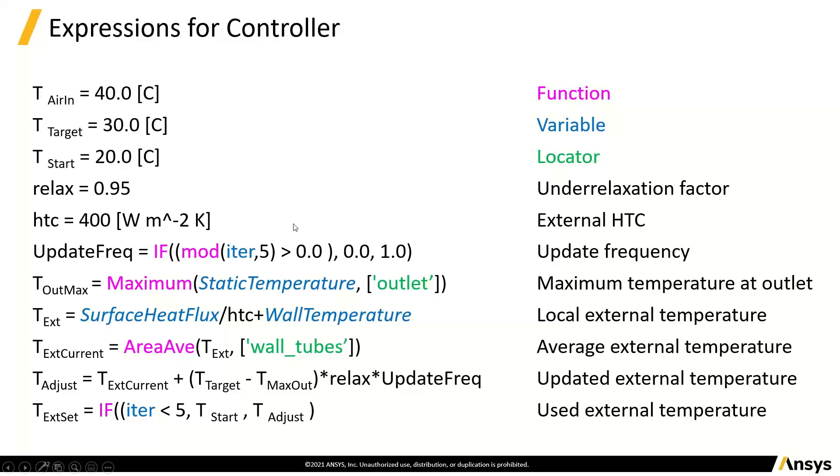Now, we want to do things every fifth iteration. So we can say here that if the modulus of iteration and five, so that will pick out 5, 10, 15, 20. If that's greater than 0, switch it to 0. But if it's 0, make this 1. And the nice thing is we'll be able to plot that in a second.